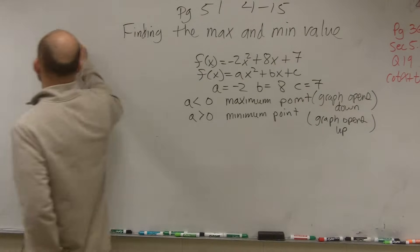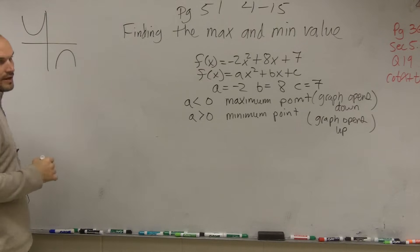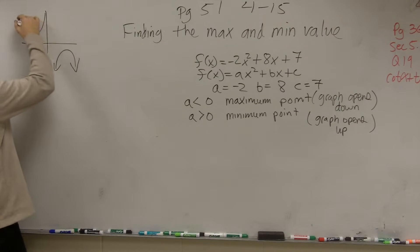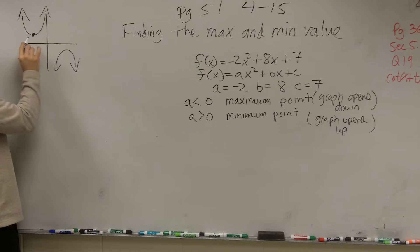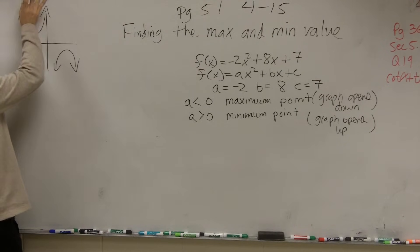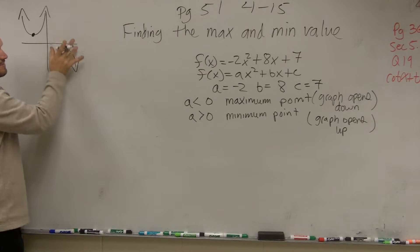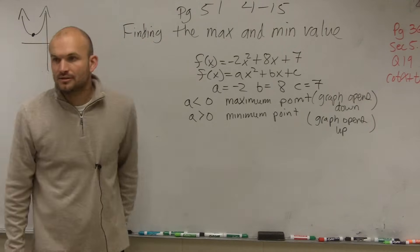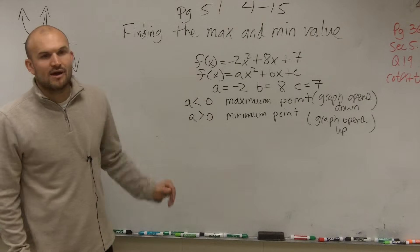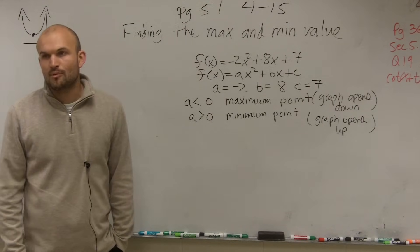What does that really mean — a maximum or a minimum point? If you have a maximum point, that means your graph opens down. And if you have a minimum point, that means your graph opens up. So if I have a minimum point, that's the lowest my graph goes, meaning my graph is going to open up. If my graph has a maximum point, that means the graph opens down. So in looking at this equation, is my graph going to open up, or is it going to have a maximum or a minimum point?